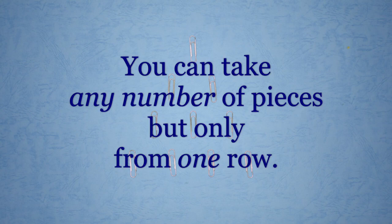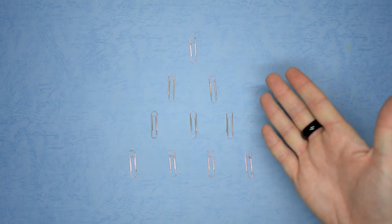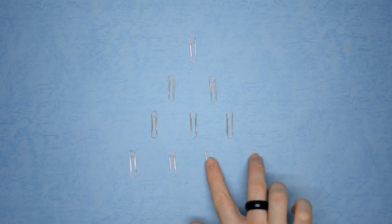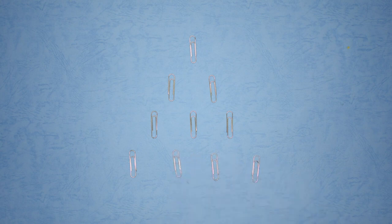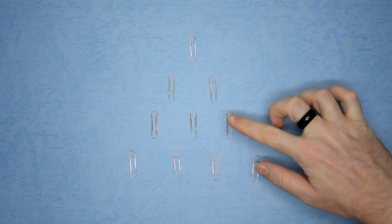There are two rules. The first rule is you can take any number of pieces, but only from one row. So I can take one from here, or two, or three. But I cannot do this.